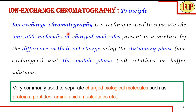Let us understand the principle behind ion exchange chromatography. It is a technique used to separate ionizable or charged molecules present in a mixture by the difference in their net charge, using the stationary phase — the ion exchanger — and the mobile phase, which can be salt solution or buffer solutions. It is used for separating charged molecules based on their net charge. For example, in case of a protein comprised of many amino acids, we look at the net charge of the complete protein, not each individual amino acid. It is very commonly used to separate biological molecules like proteins, peptides, amino acids, and nucleotides.